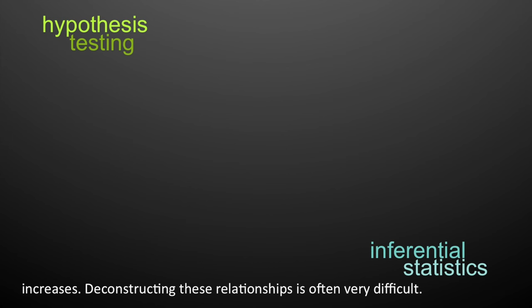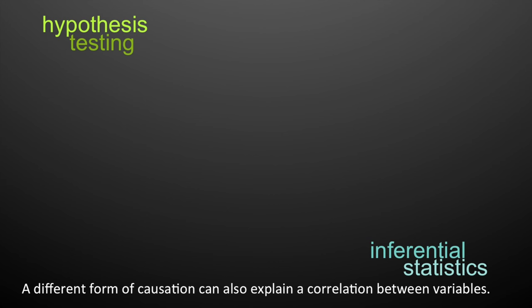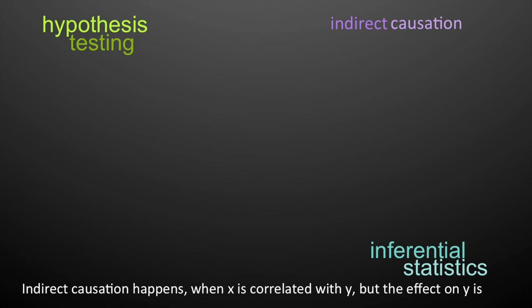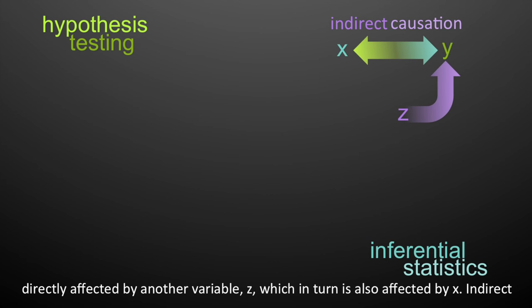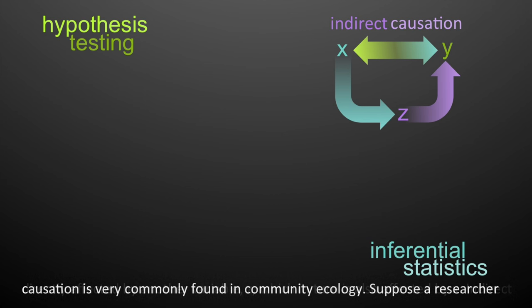Deconstructing these relationships is often very difficult. A different form of causation can also explain correlation between variables. Indirect causation happens when X is correlated with Y, but the effect on Y is directly affected by another variable Z, which in turn is also affected by X. Indirect causation is commonly found in community ecology.